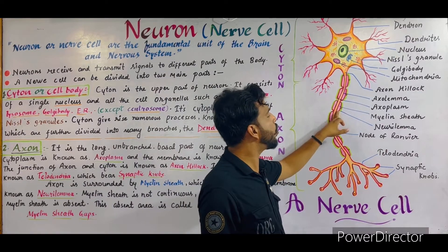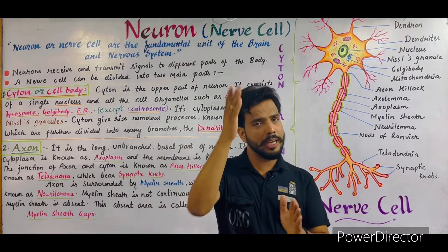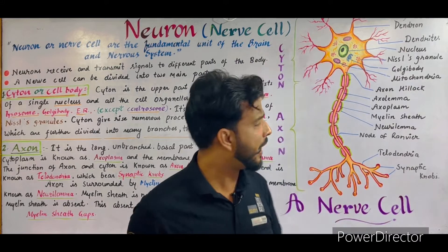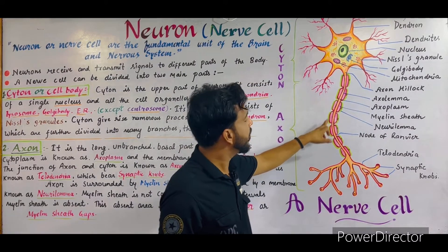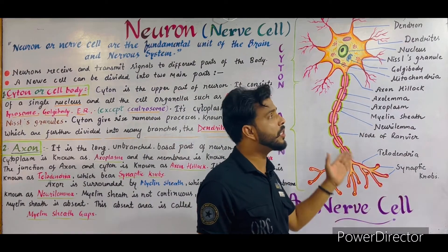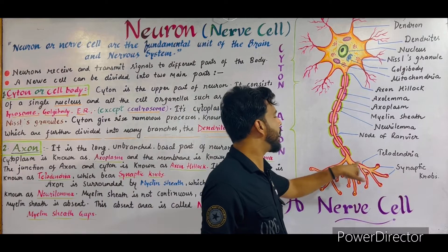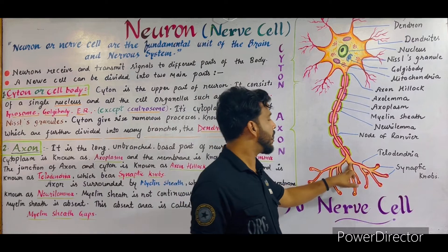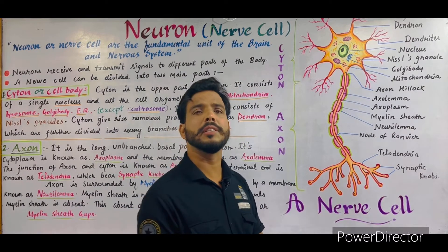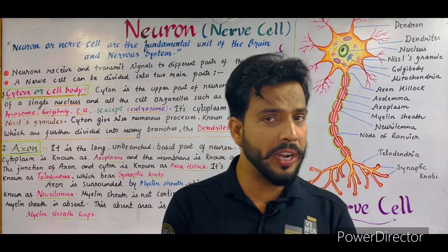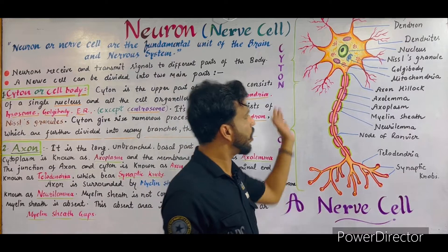Another membrane is also present on the myelin sheath which is known as the neurolemma — shown here in green. So in the center the axolemma is present, inside the axolemma the axoplasm is filled, outside the axolemma a myelin sheath is present which has several gaps at regular intervals called nodes of Ranvier, and this myelin sheath is covered by the neurolemma. At the base of the axon, several branches are present known as telodendria, which end in rounded structures called synaptic knobs, which consist of synaptic vesicles filled with neurotransmitters.